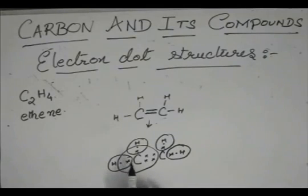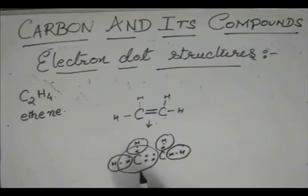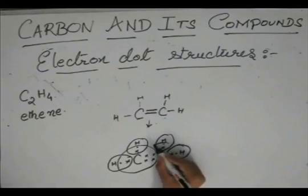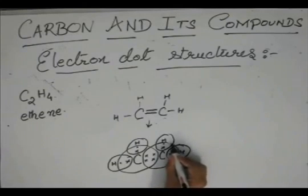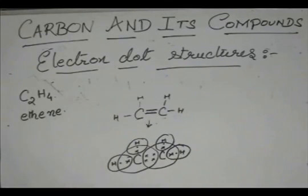So, we should make a circle in a manner like this. The total number of electrons are 4 original of this carbon, 2 of hydrogen — that's 6 — and 2 of this carbon, that's 8. And similarly, make a circle like this. So, this is the electron dot structure for ethene.